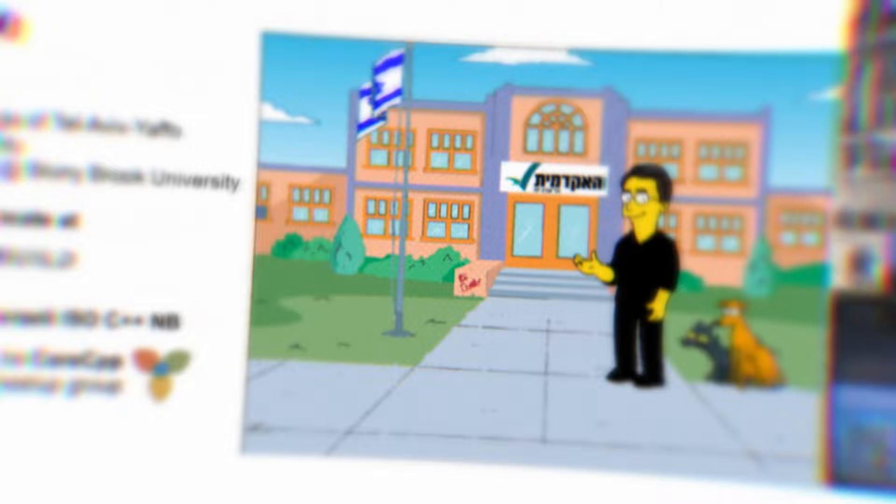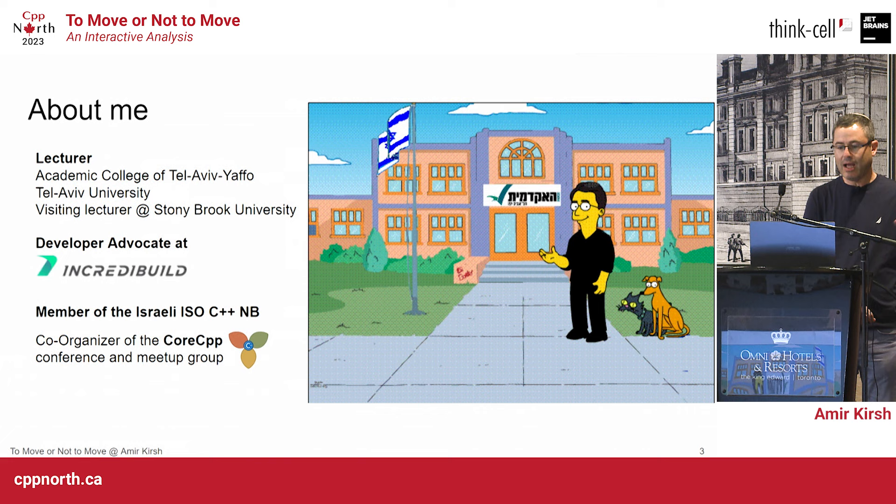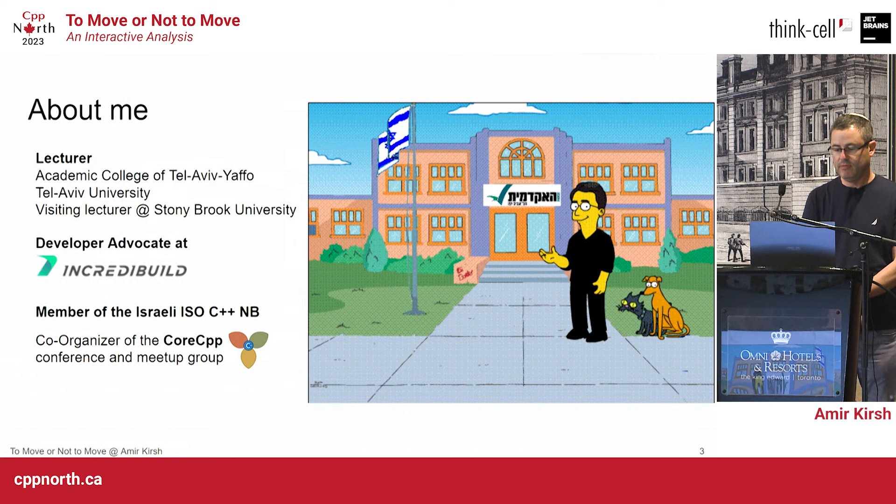My name is Amir Kirsch. I'm a lecturer at the Academy College of Tel Aviv-Yafo. This year I'm a visiting lecturer at Stonebrook University in New York. I'm a developer advocate at IncrediBuild, and a member of the Israeli ISO C++ national body. I'm also the co-organizer of the Core CPP conference and meetup group in Tel Aviv.